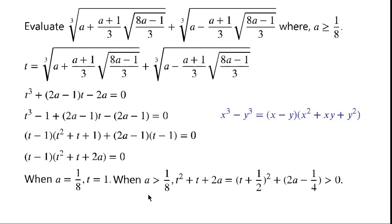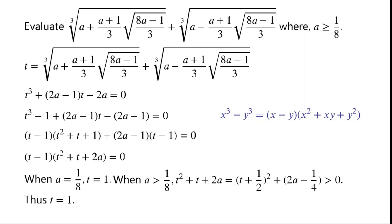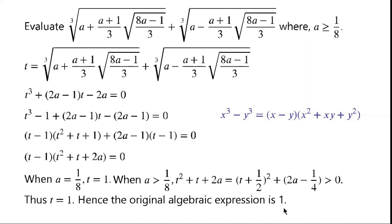When a is greater than 1 over 8, t squared plus t plus 2a can be written as (t plus a half) squared plus 2a minus a quarter. This term is greater than or equal to 0, and this term is greater than 0, so their sum must be greater than 0. Therefore t squared plus t plus 2a cannot equal 0. So t minus 1 equals 0 is the only solution, and hence the original algebraic expression equals 1.